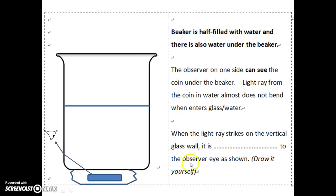While when there is water under the beaker so that the cone gets wet. In that case, the light ray can go almost straight through the beaker until there is a slight refraction just on the vertical wall of the beaker and then the light ray may reach the eye.